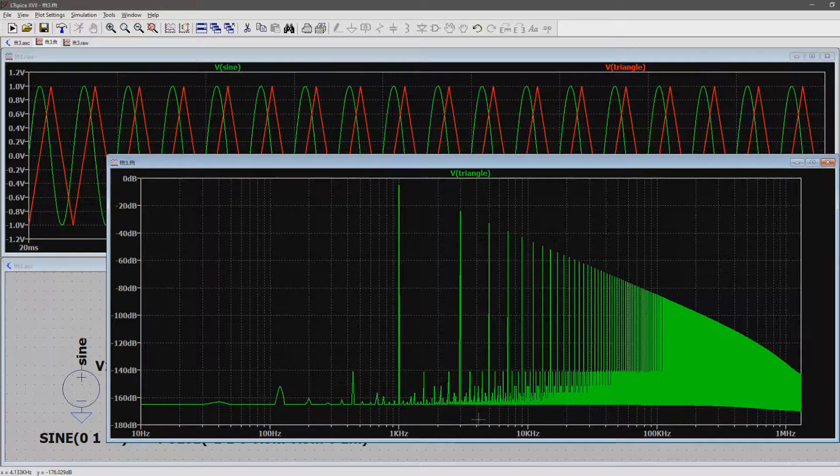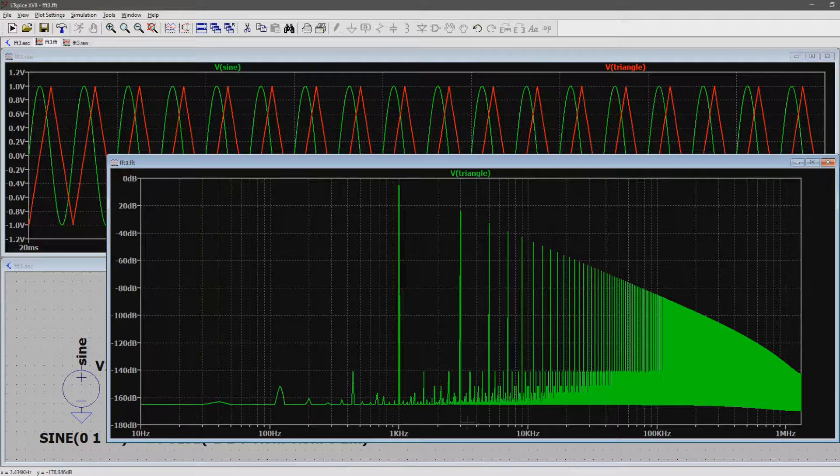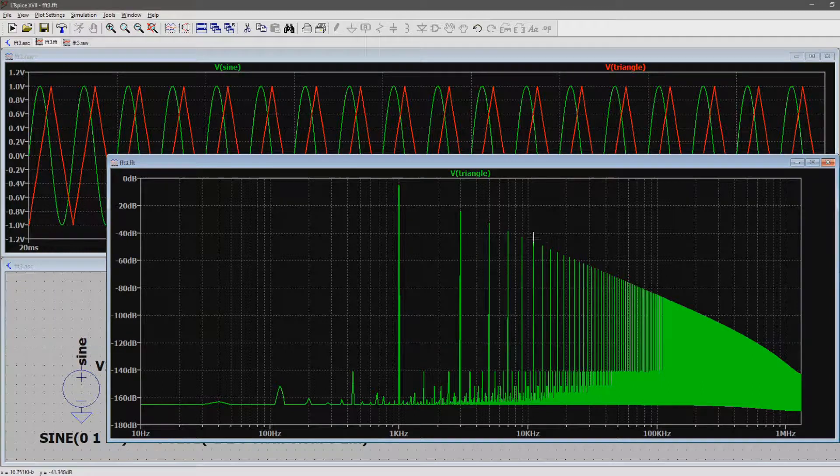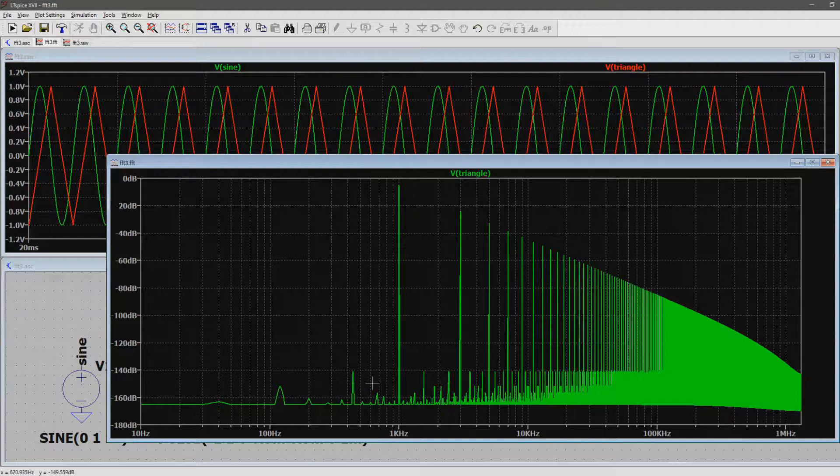Let's take a look at the frequency spectrum of a triangle by taking the FFT. For now we will ignore all spikes lower than 1kHz and all the small spikes near the noise floor. As visible are the odd harmonics going down all the way into the higher frequencies. For this example we will only focus on the first 10 harmonics.